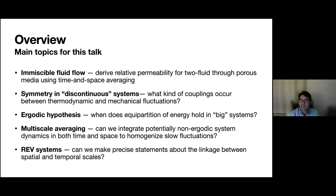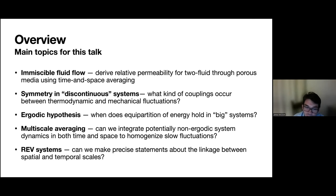This directly relates to the validity of the ergodic hypothesis, particularly in large systems. I'm going to spend some time talking about how we deal with ergodicity at finite time scales, and what we do if the system is non-ergodic at some scale. The multi-scale averaging framework integrates systems in time and space as a way to homogenize systems with slow fluctuations, and there's a link to REV systems — can we make more precise statements about the linkage between spatial and temporal scales?